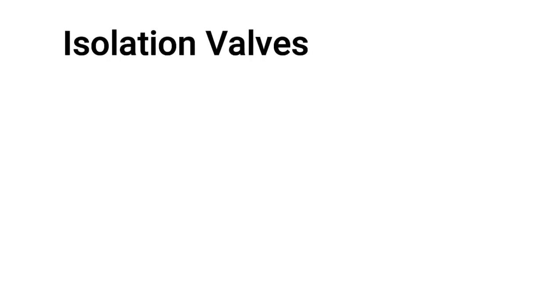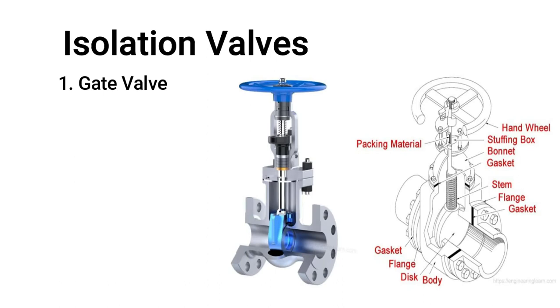Isolation valves are of mainly seven types, and some of these valves are also used as regulation valves. The first valve is the gate valve. In this image, we can see the internal mechanism and how it is operated with a hand wheel.